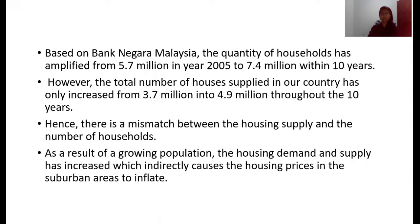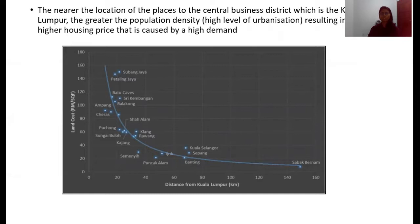As a result of growing population, the housing demand and supply has increased, which indirectly causes the housing prices in sub-urban areas to inflate. The graph here shows that the nearer the location to the central business district, which is Kuala Lumpur, the greater the population density, resulting in higher housing prices caused by high demand.